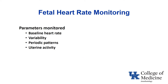Fetal heart rate monitoring is a lot like EKG monitoring in terms of interpreting it — you need to be systematic. The parameters to look at, starting with the baseline heart rate, then the variability, the periodic patterns which refers to decelerations and accelerations, and then uterine activity. Especially with decels, you need to look at the timing of when they're occurring in relation to contractions, which is why fetal heart rate monitoring has to include monitoring of uterine activity.